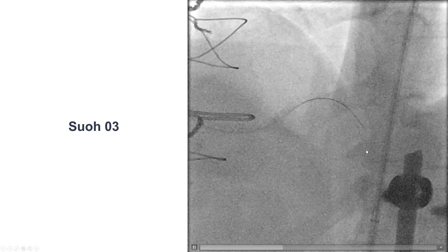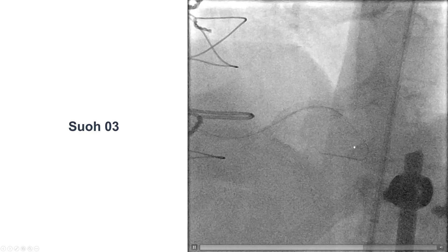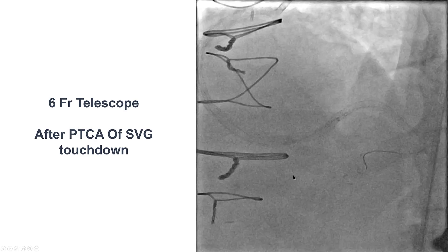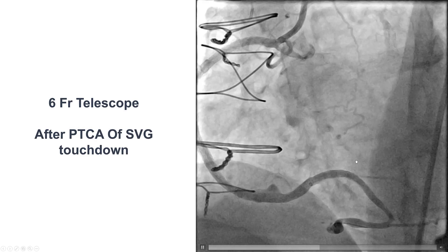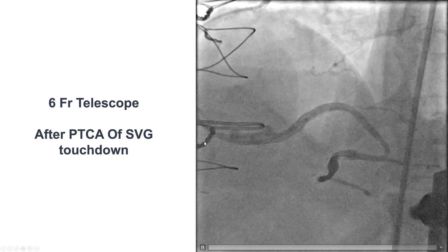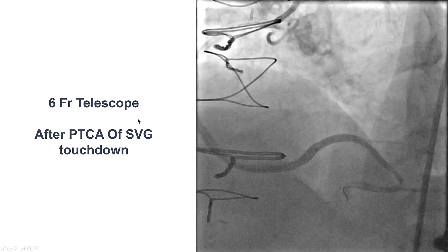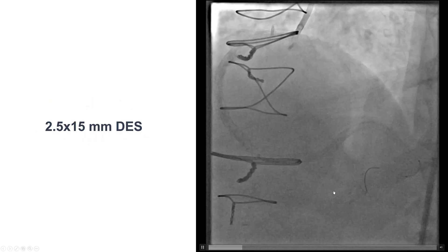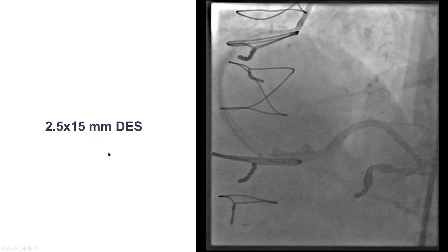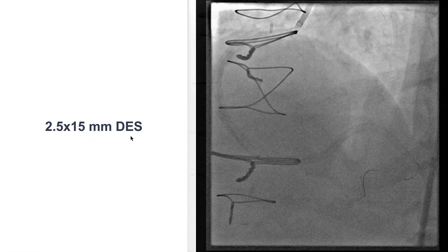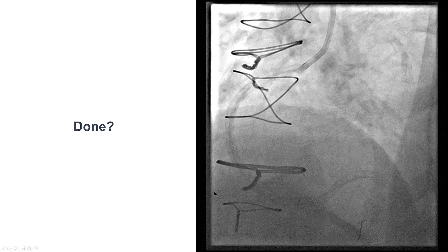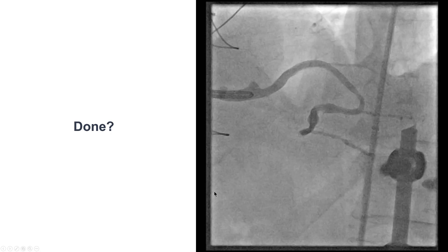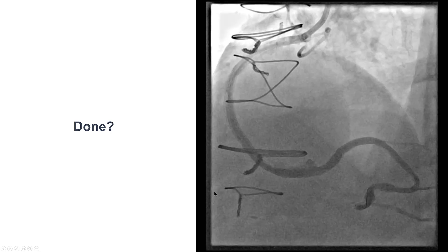This was verified by advancing a microcatheter and doing a more selective injection, which showed dissection or worsening of the lesion acutely at this touchdown of the skip graft. This can be very difficult to cross. We tried very soft SUO-3 guide wires and after multiple attempts were able to advance through that distal anastomosis of the saphenous vein graft. Delivery was extremely challenging. We eventually delivered a 6 French telescope almost all the way to the posterolateral, performed balloon angioplasty of the lesion, and were able to deliver a 2.5 by 15 millimeter drug-eluting stent across the touchdown, which restored TIMI 3 flow.